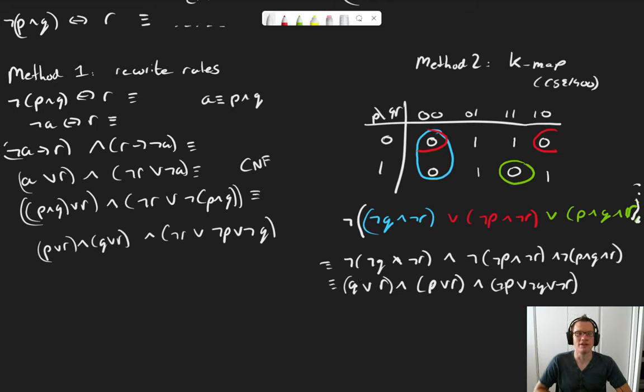So there you have it. Two methods to go from a propositional formula to an equivalent propositional formula in the conjunctive normal form. See you around for the next one.